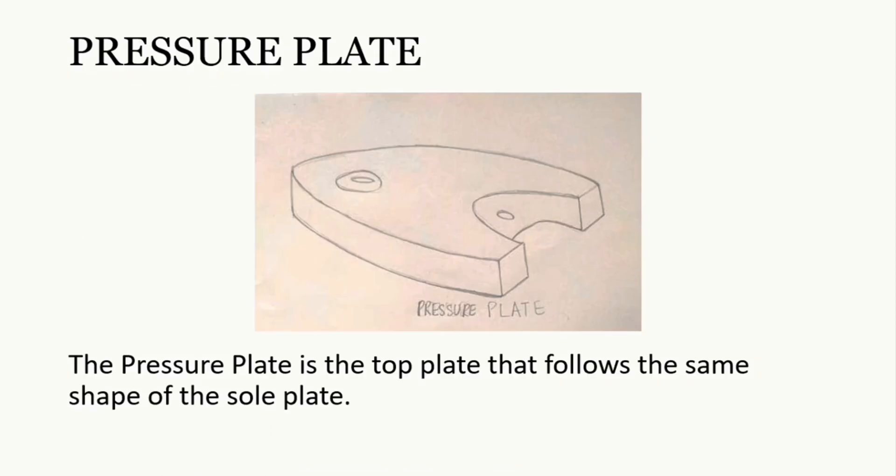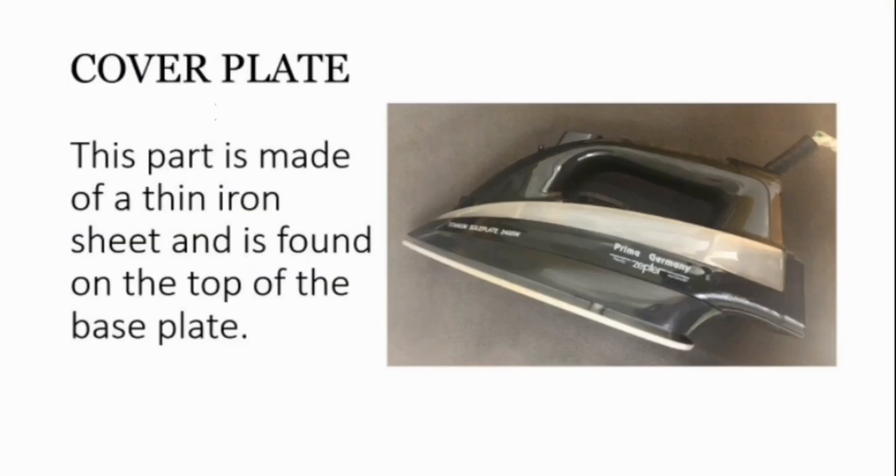Pressure plate. The pressure plate is the top plate that follows the same shape of the sole plate. Cover plate. This part is made of a thin iron sheet and is found on the top of the base plate.